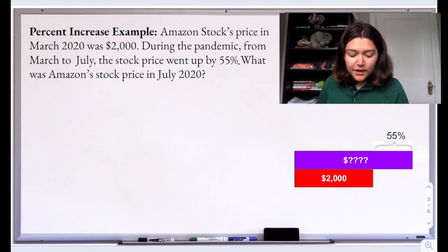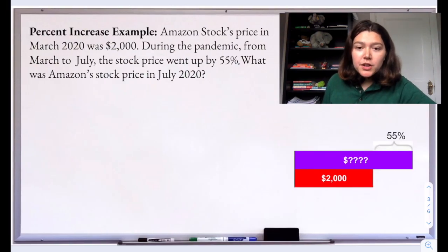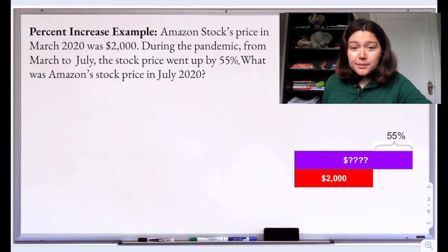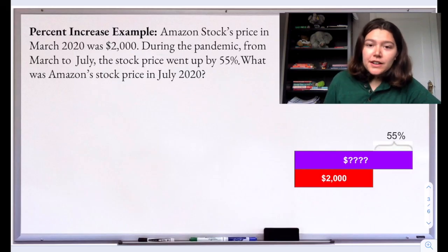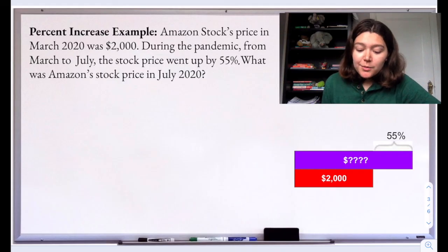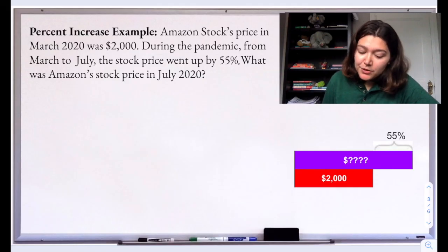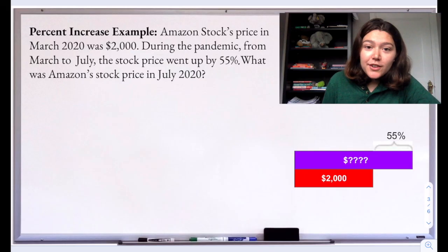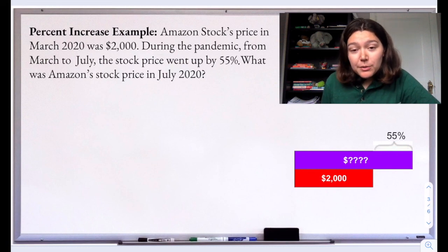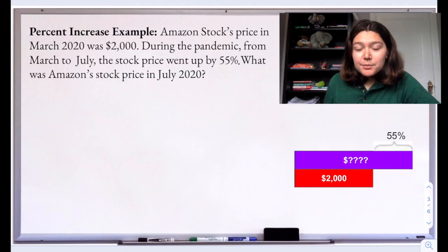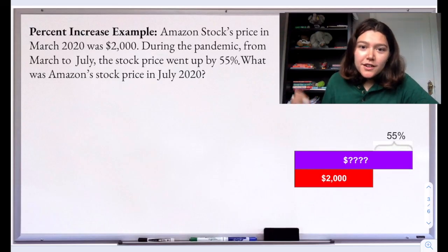Let's try a percent increase question. Amazon stock price in March 2020 was about $2,000. During the pandemic from March to July, the stock price went up by 55%. What was Amazon's stock price in July 2020? This is real data, rounded a little. Amazon stock went up a lot during the pandemic because people were ordering things instead of going out to stores. It's really a shame how much money they made given that so many small businesses were hurt during the pandemic, but that's the reality of what happened.